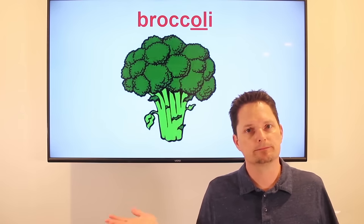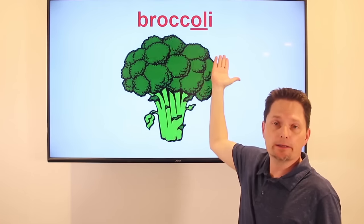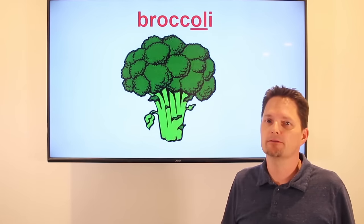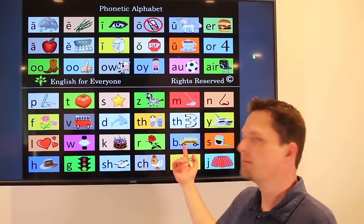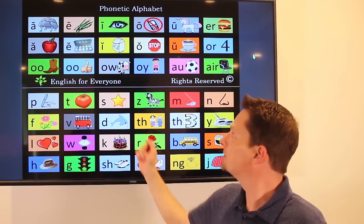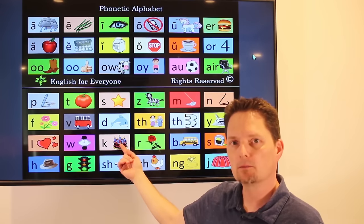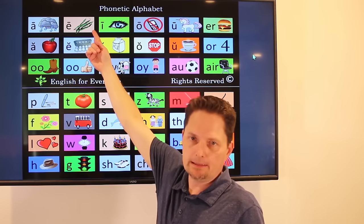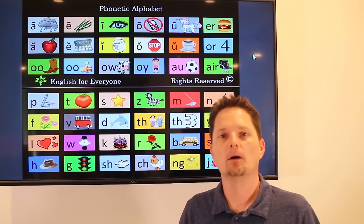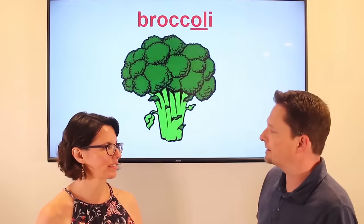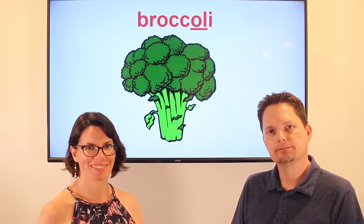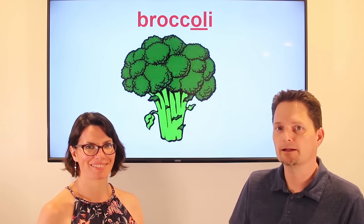Example: broccoli. It looks like 'broc-co-li,' but this syllable is silent, so we say 'broccoli.' I love broccoli — it's my favorite vegetable. Do you eat broccoli every day? Yes, I eat broccoli every day. Does she eat broccoli every day? Very good.